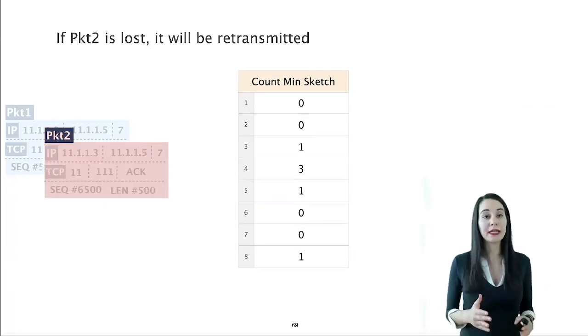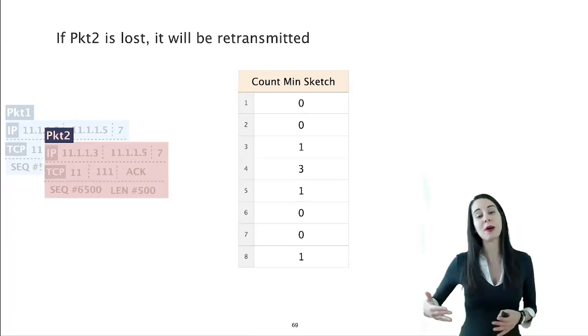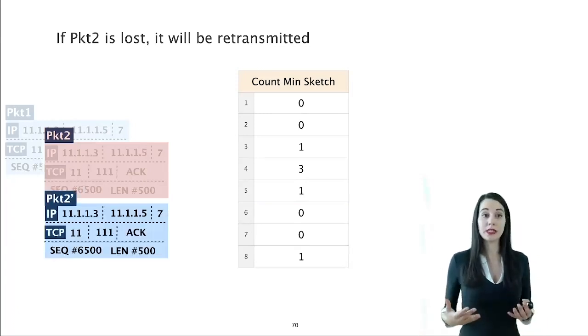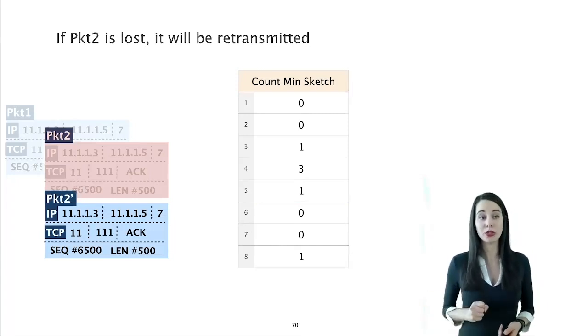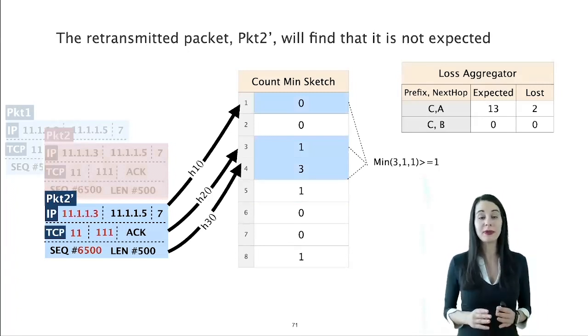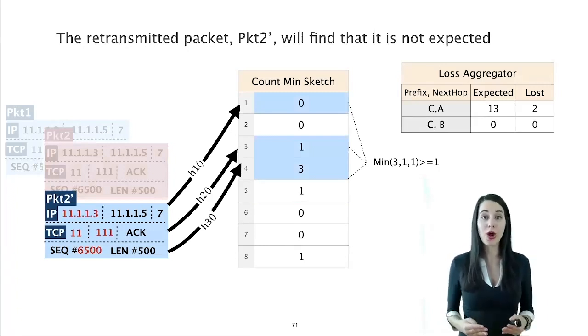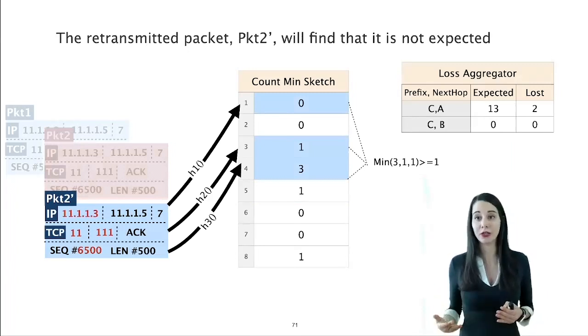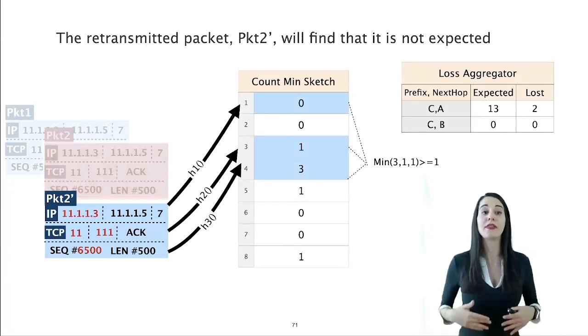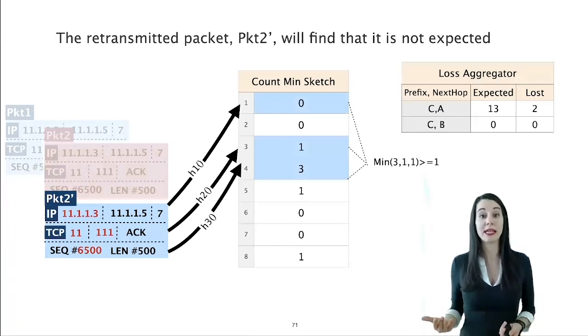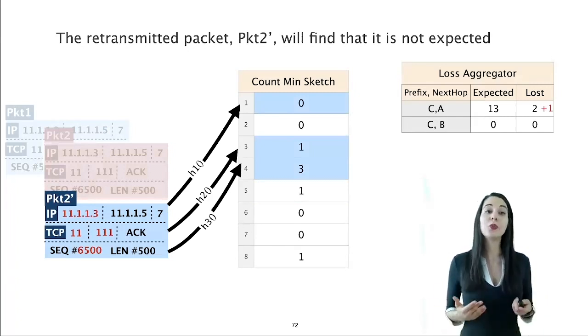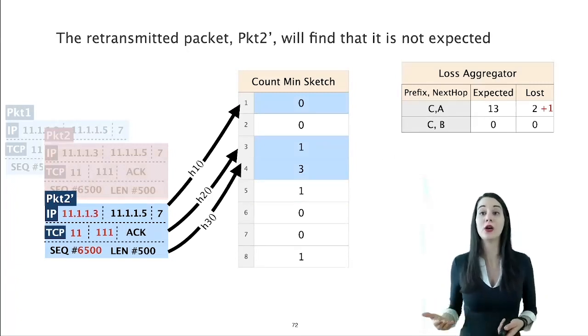Now assume that packet 2 is lost after it has passed through the loss monitor. Thus, packet 2 will be eventually retransmitted and passed again through the same procedure. Concretely, the retransmitted packet, say packet 2 prime, will have the same sequence number as packet 2 and will try to verify that it is expected. This verification will fail as packet 2 has already been received and removed from the CMS. So packet 2 prime will trigger an increase in the number of retransmitted packets in the loss aggregator.